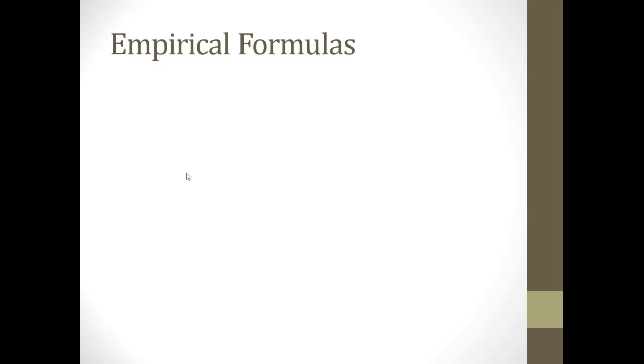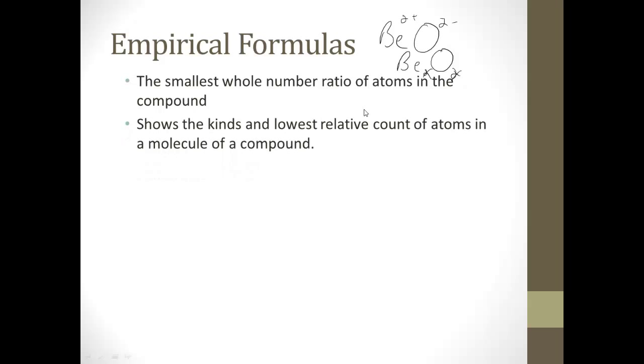Next thing that we're going to talk about are empirical formulas. And an empirical formula, it's kind of like an experimental formula, is the smallest whole number ratio of atoms in a compound. Kind of similar to when we said beryllium oxide, and we said Be was 2+ and oxygen was 2-. So when we crisscross, we get Be2O2. And we say, alright, we have to reduce these, so we just said BeO. So it's kind of like that. We're finding the simplest whole number ratio. The empirical formula shows the kinds of atoms and lowest relative count of atoms in the molecule of a compound.